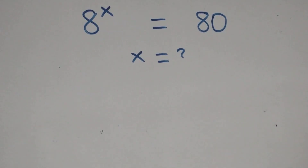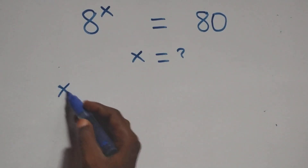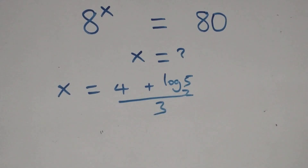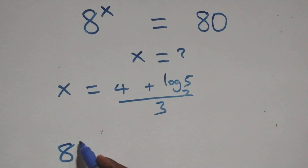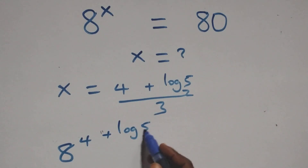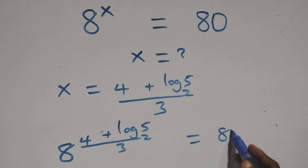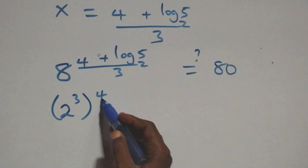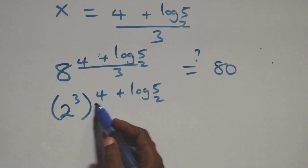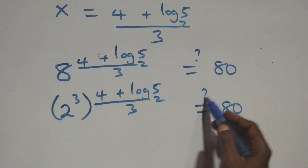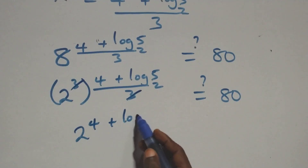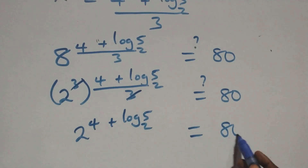Now let's check if this satisfies the original problem. We substitute x equals to (4 plus log₂5) over 3 into 8^x. This becomes 8 raised to the power (4 plus log₂5) over 3. We can write 8 as 2³, so we have (2³) raised to the power (4 plus log₂5) over 3. The 3 in the power and the 3 in the denominator cancel, giving 2 raised to the power (4 plus log₂5), which equals 80.